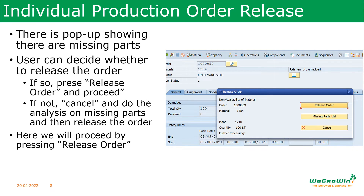When you press the release flag button, the system pops up a page showing there are some missing parts. It gives three options: release the order, check the missing part list, or cancel. The planner who is going to release the order has to decide whether to release it or not. If you want to release it, press release order and proceed. If not, click the missing part list to see which parts are missing, then cancel and come out.